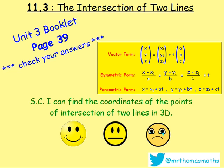Try some of these questions on your own. Just remember: first, write both line equations in parametric form. Then equate the coordinates. Solve using simultaneous equations. Check the result in the third equation — if it satisfies, the lines intersect. Then substitute your t or s value to find the point of intersection. Have a look at the questions on page 39. Best of luck!